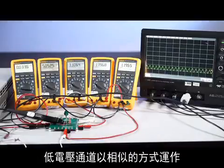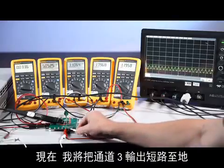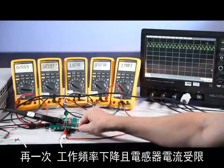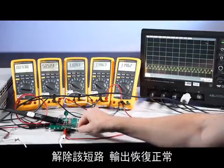The low voltage channels operate similarly. Now I'll short channel 3 output to ground. Once again, the frequency drops and the inductor current is limited. Release the short and the output returns.